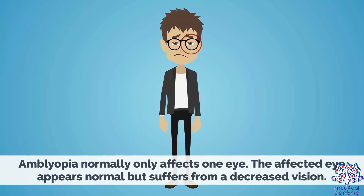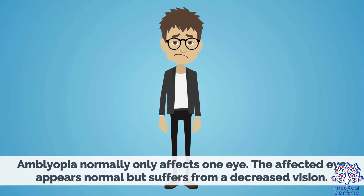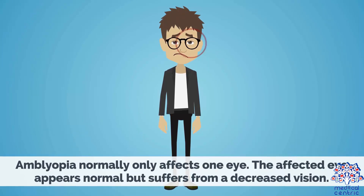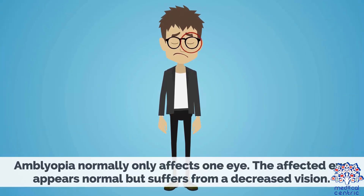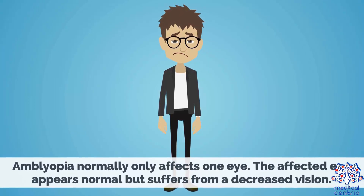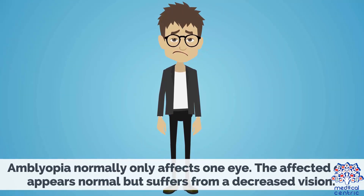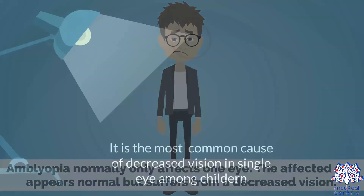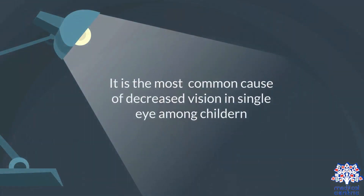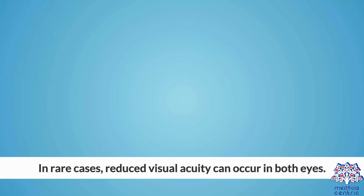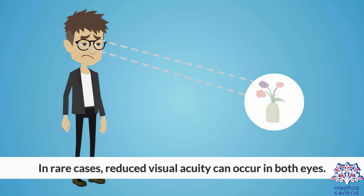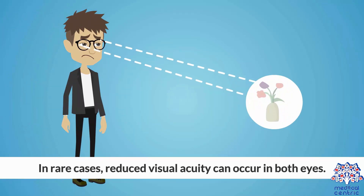Amblyopia normally only affects one eye. The affected eye appears normal but suffers from decreased vision. It is the most common cause of decreased vision in a single eye among children. In rare cases, reduced visual acuity can occur in both eyes.